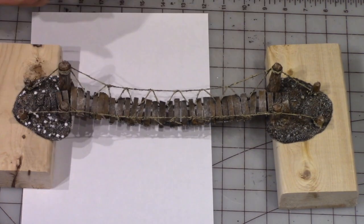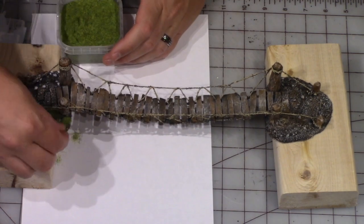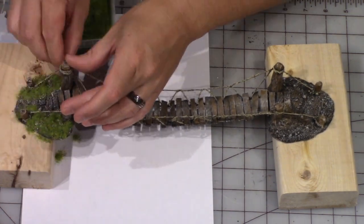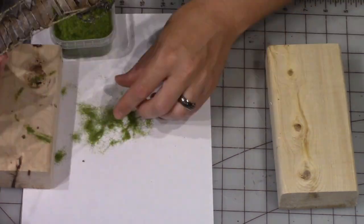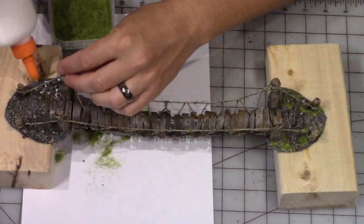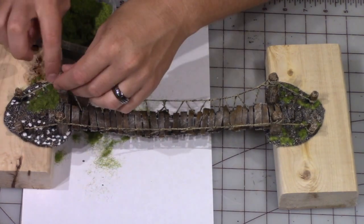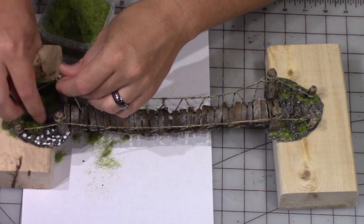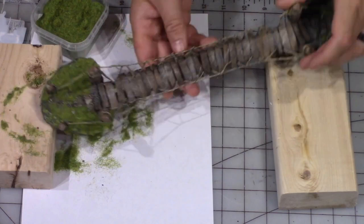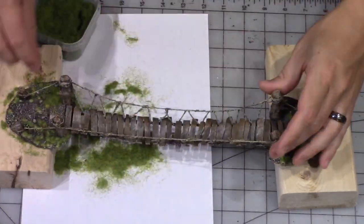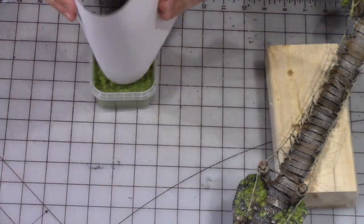Then I'm using some white glue to dab on some dots and put on some static grass. If you wanted to do some other vegetation or not vegetation, you can put rocks or anything on those ends. I decided to do it more of a jungle themed rope bridge.